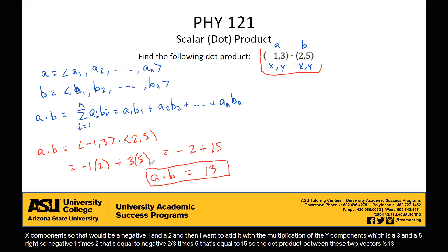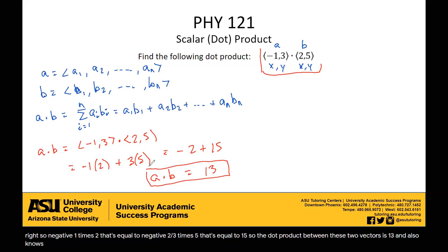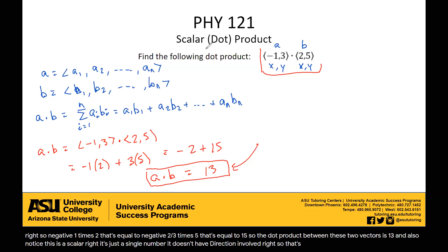Also notice this is a scalar — it's just a single number. It doesn't have direction involved, which is why it's called the scalar product as well.